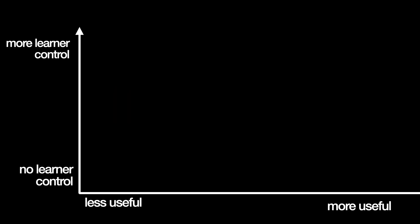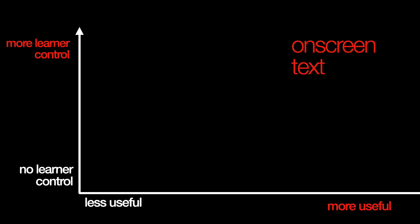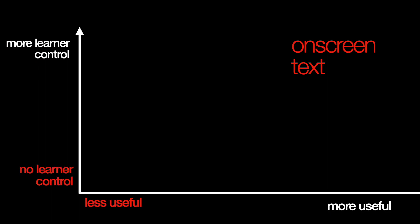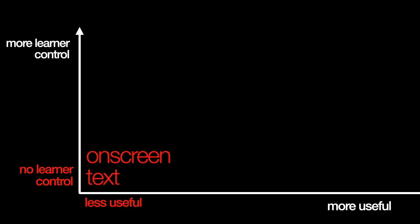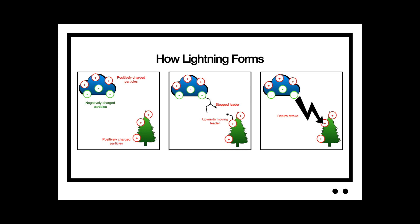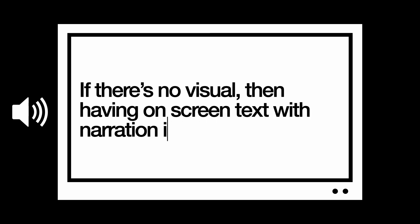So where does that leave us with the redundancy principle? As a rule of thumb, it's a good idea to provide viewers with the option of turning on subtitles. If you're designing multimedia that learners can advance at their own pace, then providing the option of having on-screen text in addition to narration is not going to be an issue and might even be helpful. However, if you're doing a presentation and viewers don't have control over the pacing, then it's best to reduce the amount of redundant text on screen. Also remember that the redundancy principle only applies to lessons that involve something visual that you want students to look at as well as narration. If there's no visual, then having on-screen text with narration is less of an issue.